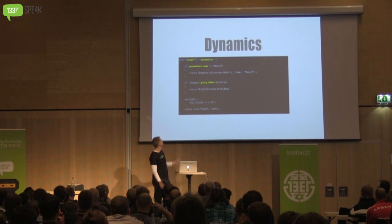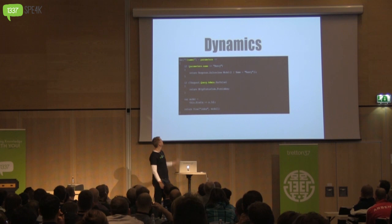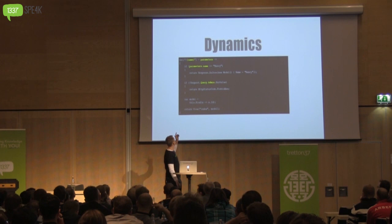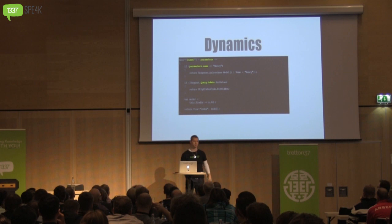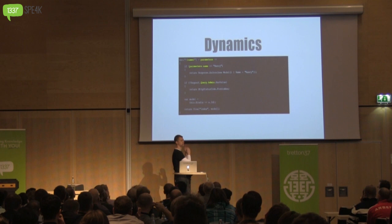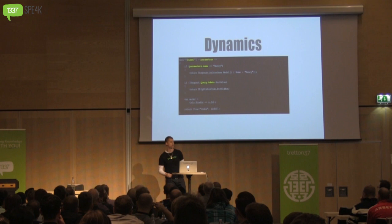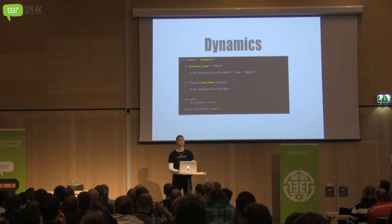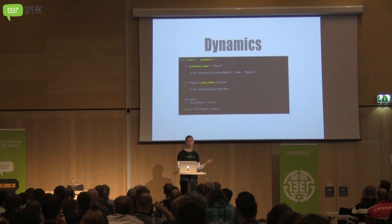If we look at the highlighted sections of this code snippet, when our route handler is invoked, we pass in a variable called parameters into our function, and on that variable we access a property called name. Nothing is out of the ordinary here — this is standard C# code — if it wasn't for the fact that the type that parameter is doesn't have a property called name. It doesn't exist. Normally the compiler would step in and say: I know for a fact the type parameters is doesn't have a name property, so I'm not even going to build this code.